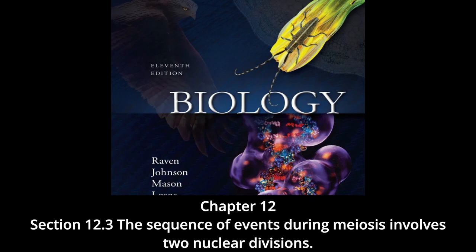The cells that contain these haploid nuclei may develop directly into gametes, as they do in animals. Alternatively, they may themselves divide mitotically, as they do in plants, fungi, and many protists, eventually producing greater numbers of gametes, or as in the case of some plants and insects, adult individuals of varying ploidy. Synopsis: during meiosis one, homologous chromosomes move toward opposite poles in anaphase one, and individual chromosomes cluster at the two poles in telophase one.